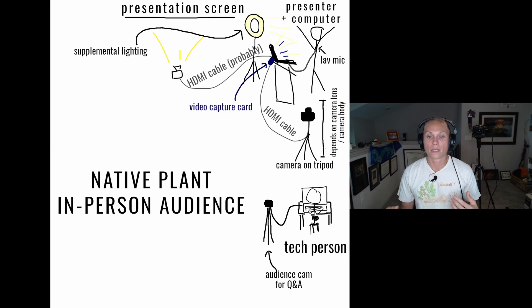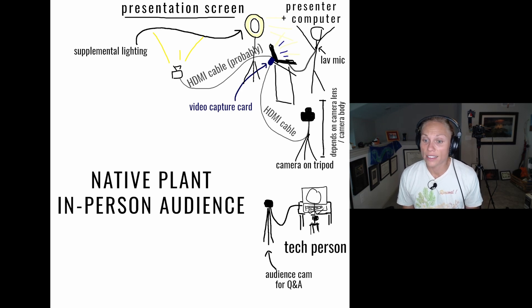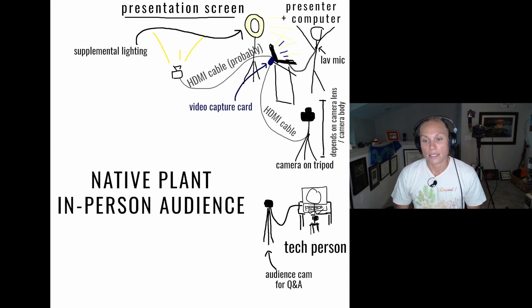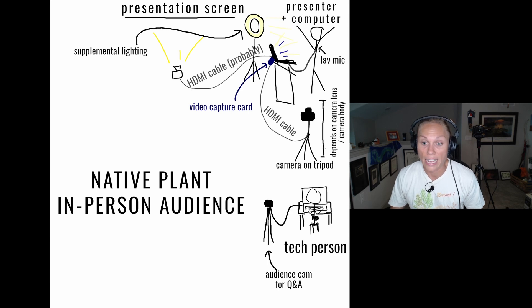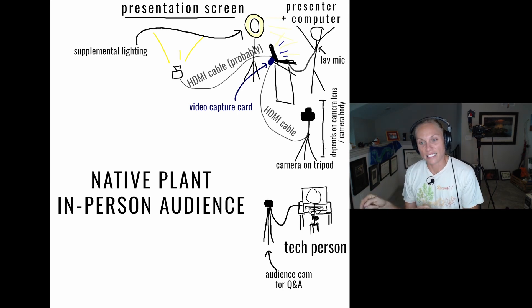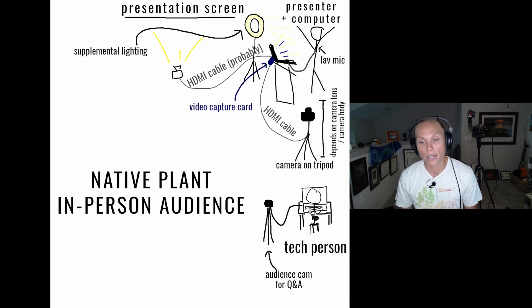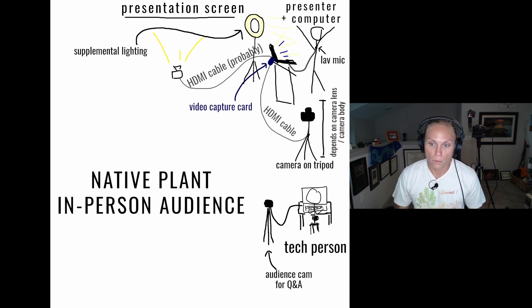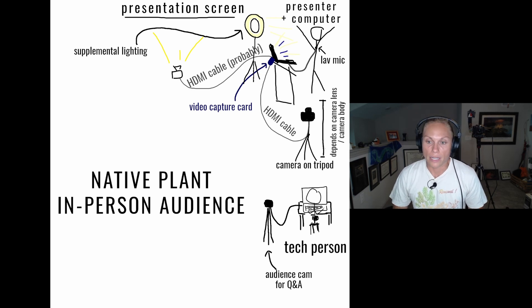The last thing we'll look at is a diagram of what Go Big or Go Home would look like. I forgot the second monitor on this diagram — and there are no headphones on the tech person. You can see there's supplemental lighting, a video capture card connected to an HDMI cable, which is connected to the camera on the tripod. The distance from the presenter depends on your camera and lens. The presenter is using a lav mic connected to the computer, or you can have that lav mic connected to the camera and the sound sent through the HDMI cable to the Zoom or StreamYard. Then you have your tech person with the audience cam for Q&A and that extra monitor.